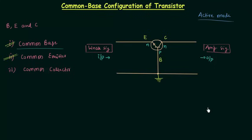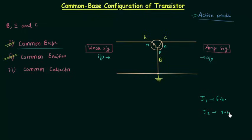There are two junctions in a transistor: junction J1 and junction J2. In active mode of operation, junction J1 is forward biased and junction J2 is reverse biased.